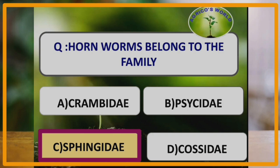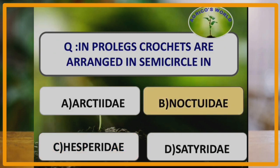Hornworms belong to the family Sphingidae. The larvae of these worms have a mediodorsal horn, called the anal horn, on the eighth abdominal segment, and the sound-producing organ in the adult is the pilifer. In prolegs, crotchets are arranged in a semicircle in the order Noctuidae.